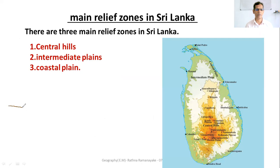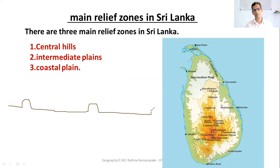Residual hills — examples include Sigiriya, Katharagama, Kurunegala, and Ethukala. These are residual hills found in the Intermediate Plain.